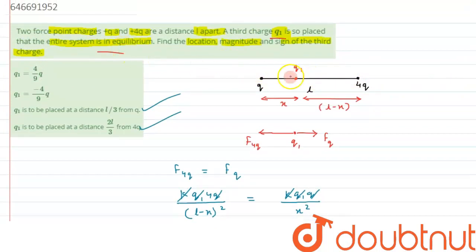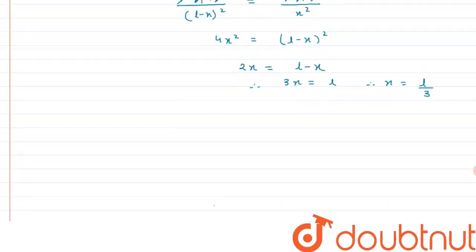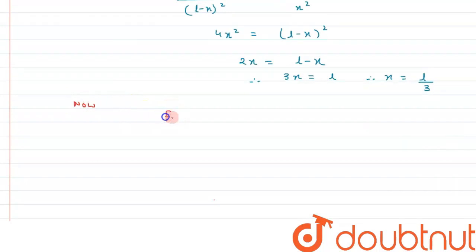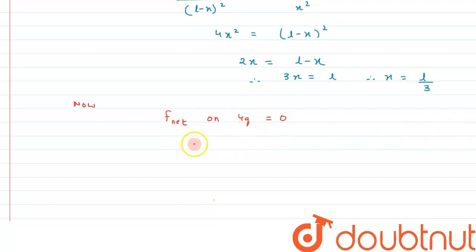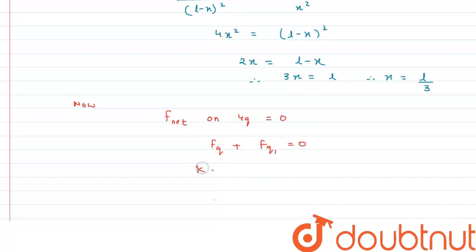Since the system is in equilibrium, the net force on every charge is zero. Let's take the net force on charge 4q to be zero. The force on 4q is due to charge q and due to charge q1, and the sum must equal zero.